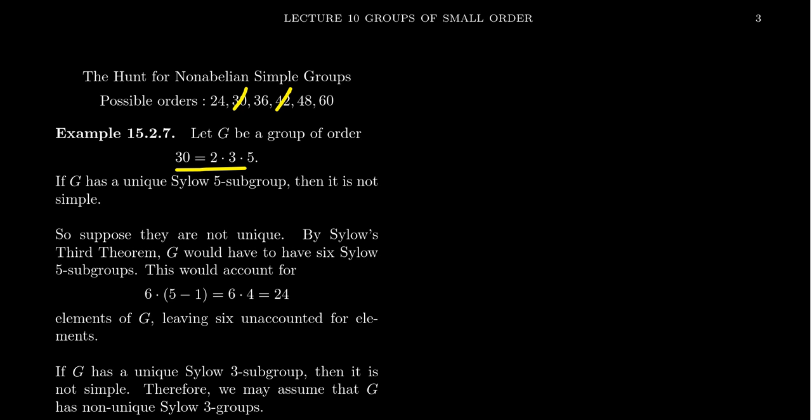So let's start with 30. 30 is different than any of the other ones we've considered so far because 30 is the product of three distinct primes: three, two, three, and five. There's no repetition, but we have three distinct primes. So I want us to consider what are the possibilities here.